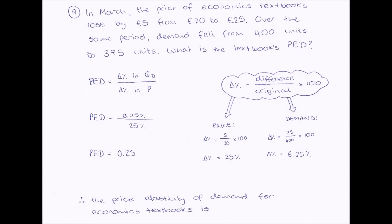I'm going to use an example question to illustrate this mathematical equation. The question reads: in March, the price of economics textbooks rose by £5, from £20 to £25. Over the same period, demand fell from 400 textbooks to 375 textbooks. What is the textbook's price elasticity of demand?